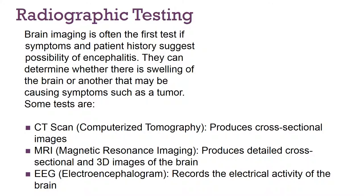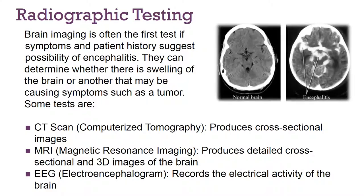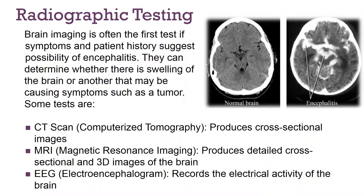A CAT scan produces cross-sectional images, MRI produces 3D images, and EEG records the activity of the brain waves. These tests can help determine if there's maybe a tumor or something present. White spots on the images show that encephalitis or swelling of the brain is present.